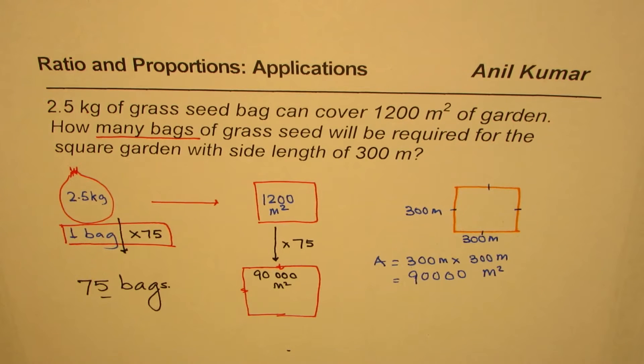I'm Anil Kumar and I hope this concept helped you to understand how to avoid your mistake and correctly get to the answer. So the answer is 75 bags will be required for a square garden with side length of 300 meters. Now in a word problem you should write down the complete statement as your answer.